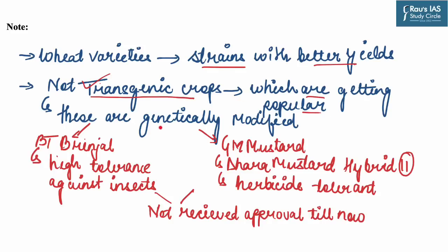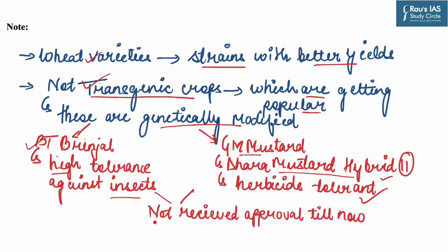The wheat varieties discussed are not the transgenic crops that are becoming popular today. Transgenic crops are genetically modified and different from these variants. Some examples of transgenic crops are BT Brinjal, which shows high tolerance against insects, and GM Mustard — Dhara Mustard Hybrid 2 — which is a herbicide-tolerant transgenic crop. However, both these transgenic crops have not received approval till now.